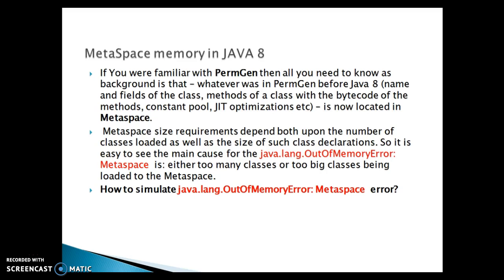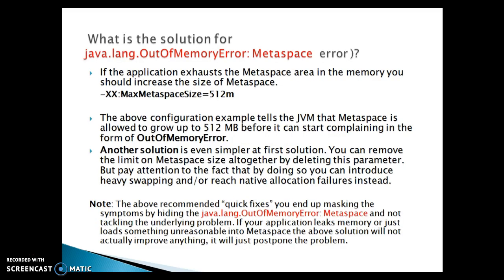We will see how to simulate an OutOfMemory MetaSpace error in a demo. What is the solution for OutOfMemory MetaSpace? If your application exhausts the MetaSpace area in memory, you should increase the size of MetaSpace by specifying the VM argument -XX:MaxMetaSpaceSize and whatever size you want to set. For example, this tells the JVM that MetaSpace is allowed to grow up to 512 MB before it starts complaining with OutOfMemory.